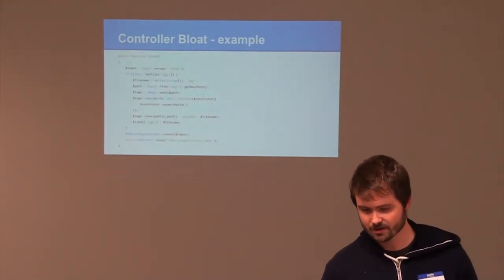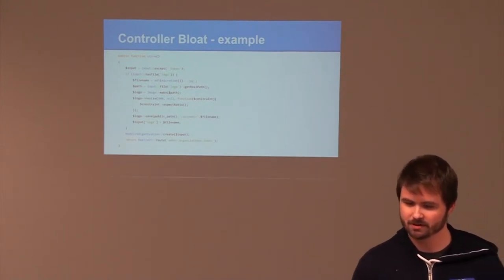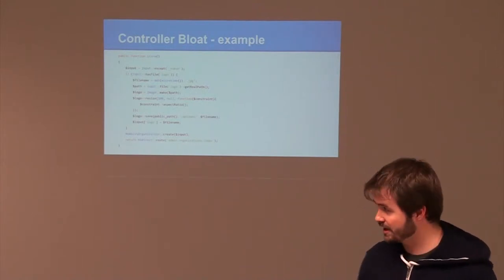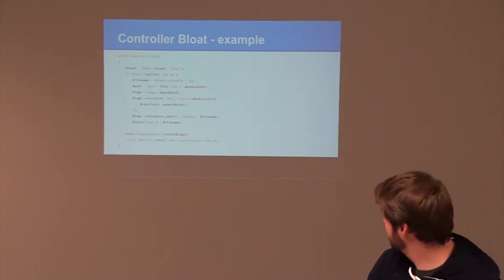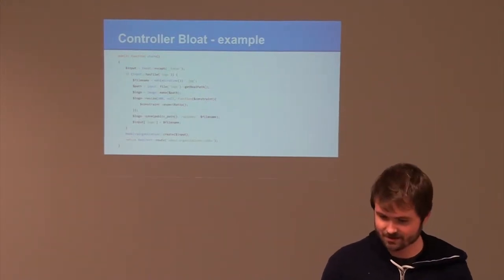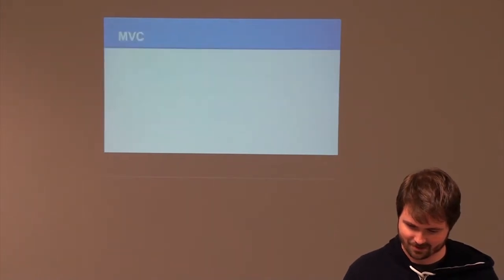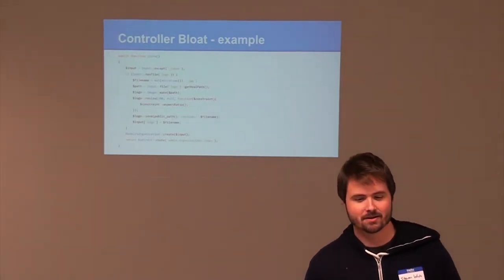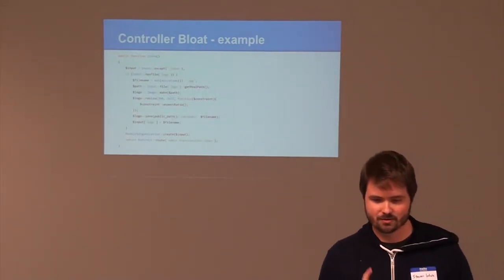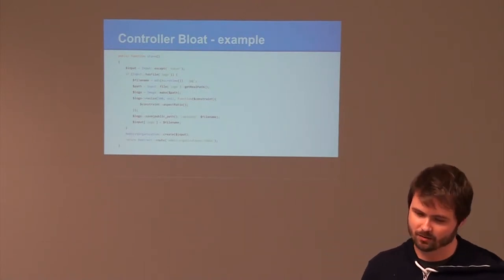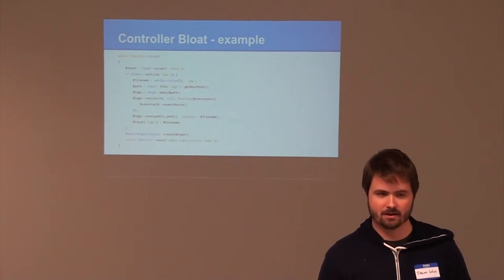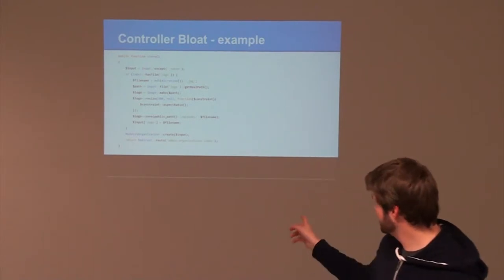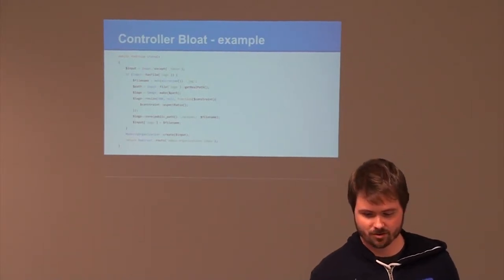So an example of controller bloat. This was actually taken from the first pass of the Upstate PHP website. This was the method to create a new sponsor for the group. So we just gather input requests. We gather the input. If we have a file, then we need to create a hash name for the file. We need to get the path of it. We're going to create an image of it, resize it, save the file, update the input. Then we're going to create the actual model instance, and then redirect back. Well, there's way too much logic going on inside of this controller, so we easily have controller bloat.